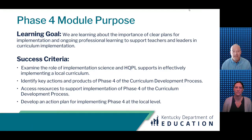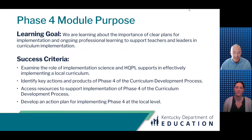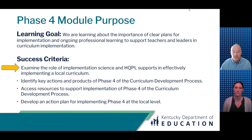Now that you have a preliminary sense of where you might be relative to our learning goal, let's move into success criteria for Module 4. Our success criteria are: examine the role of implementation science and high-quality professional learning supports in effectively implementing a local curriculum; identify key actions and products of Phase 4 of the Curriculum Development Process; access resources to support implementation of Phase 4; and develop an action plan for implementing Phase 4 at the local level.